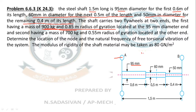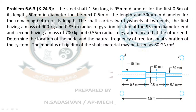The diagram may not be given in the exam — you have to draw it just by reading the question. The second flywheel has a mass of 700 kg and 0.85 meter radius of gyration located at the other end. Determine the location of the node and the natural frequency of free torsional vibration. The modulus of rigidity of the shaft material is 80 GN/m².